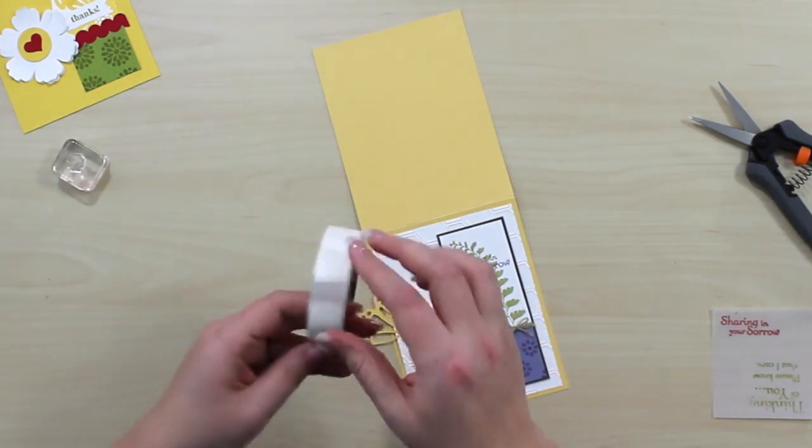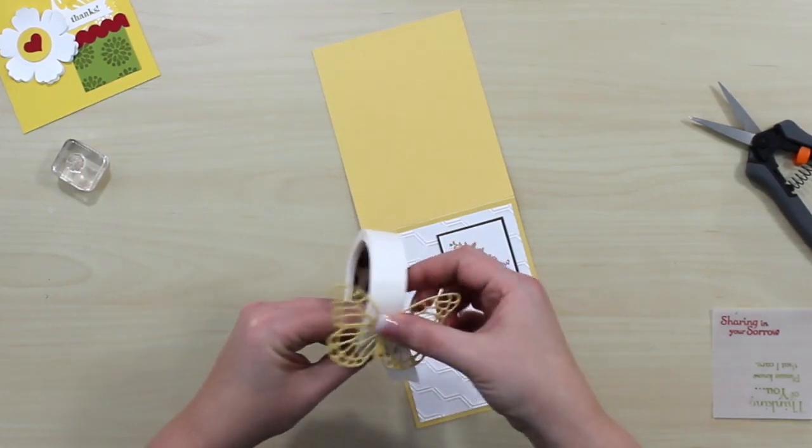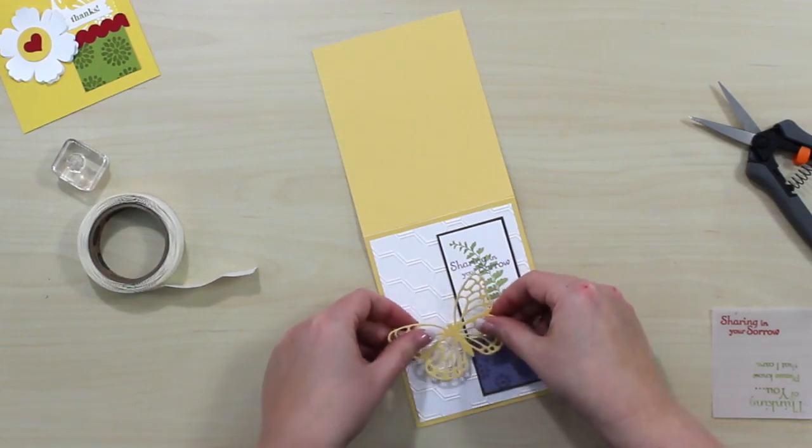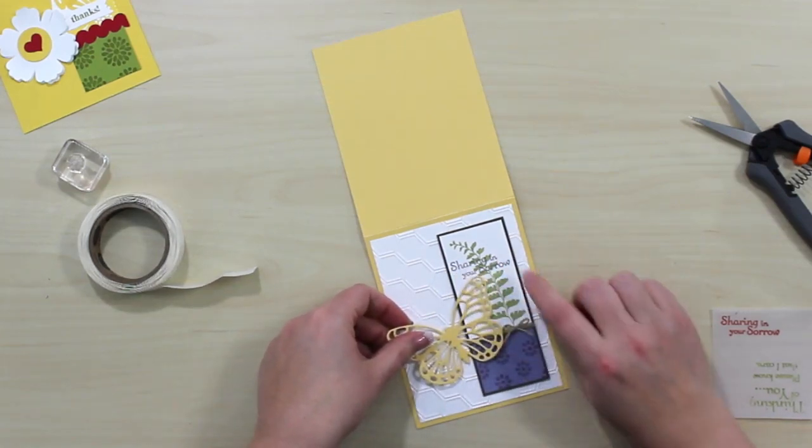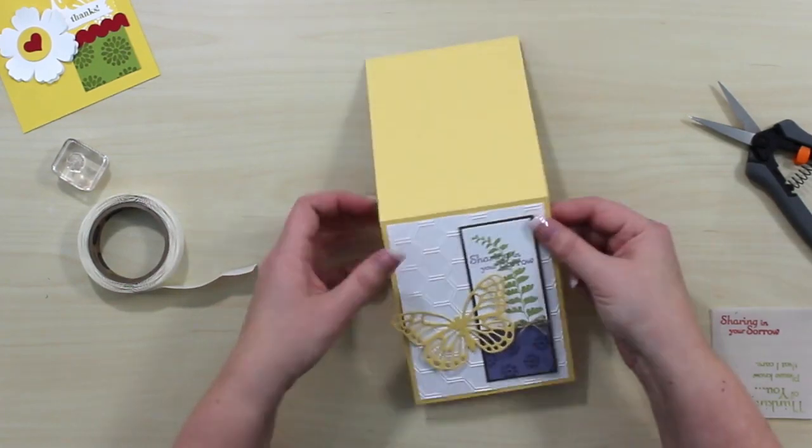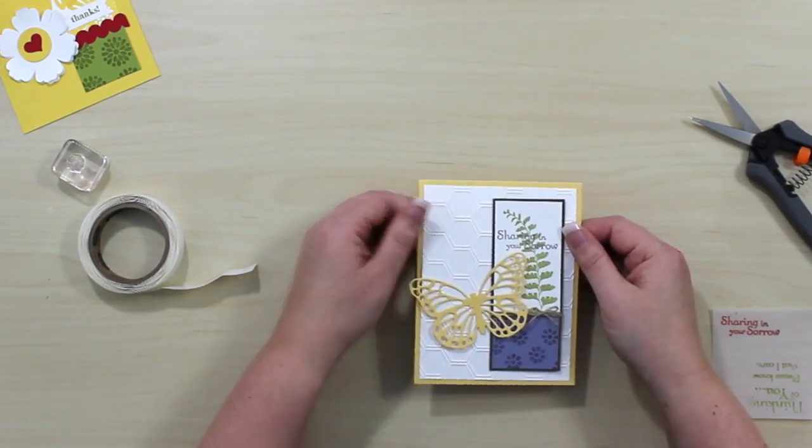Then I'm ready for this guy, and he is going to go on with a glue dot, kind of make him fly a little bit, and then pay attention to where your words are, and that will help you place your butterfly. And just like that, we've got a beautiful, elegant sympathy card.